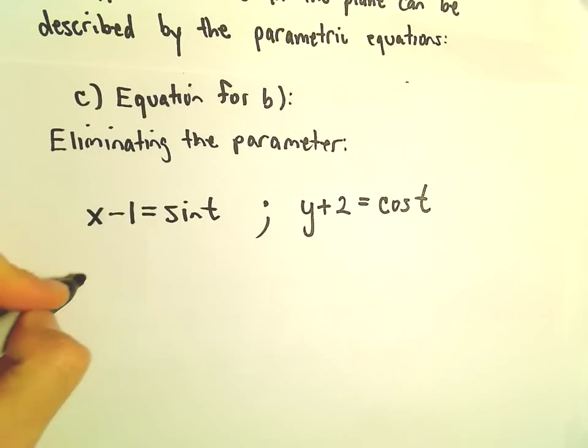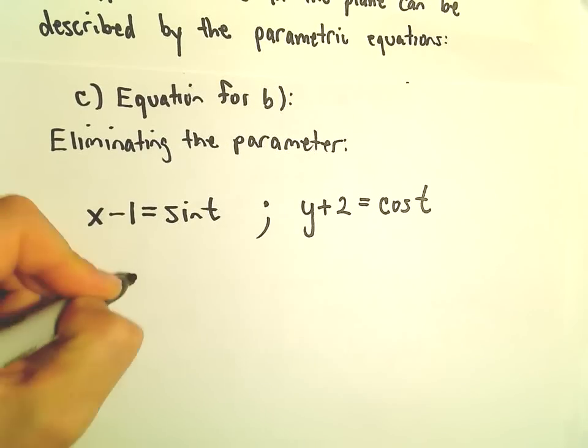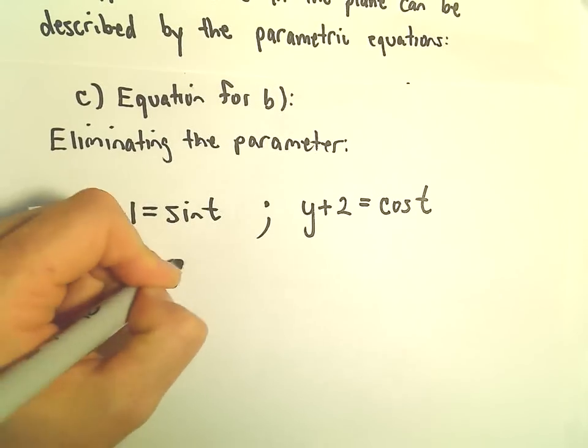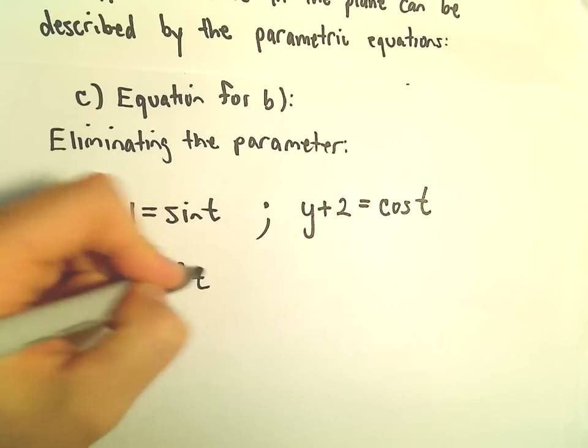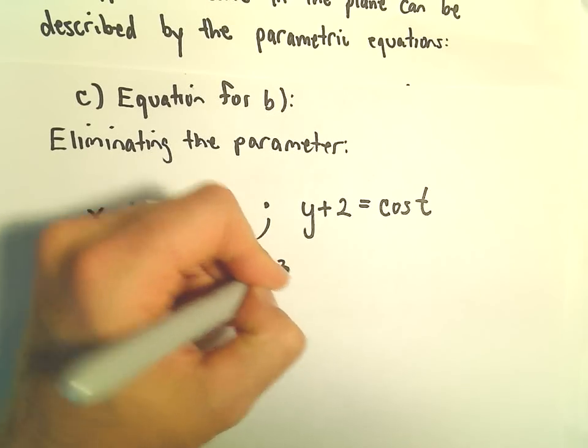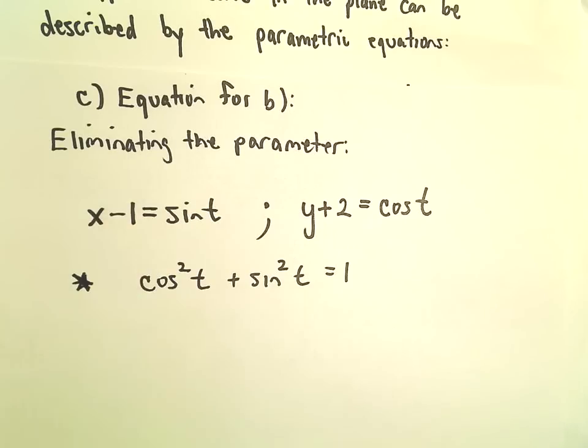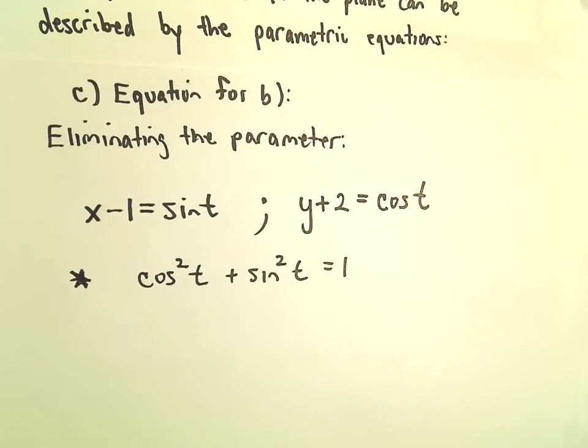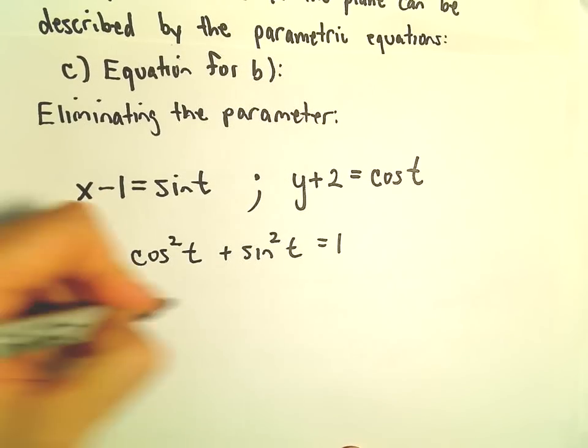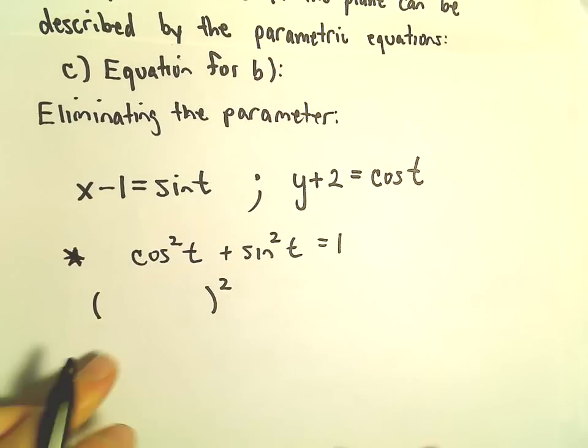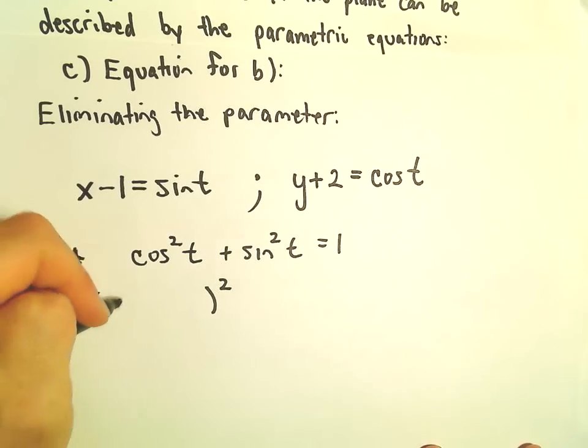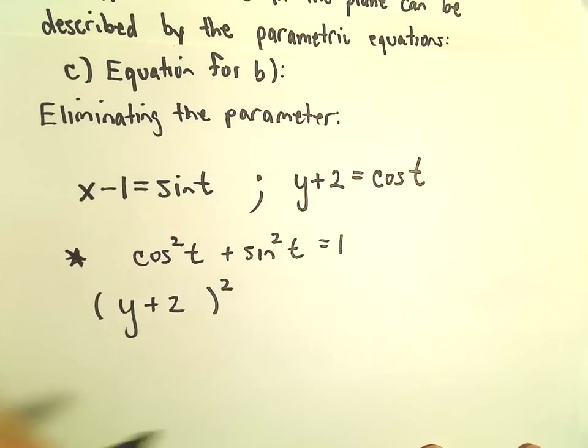But now we're going to use a little trig identity. Recall cosine squared t plus sine squared t equals 1. We can replace, so we've got cosine squared. Cosine is going to be y plus 2 quantity squared.